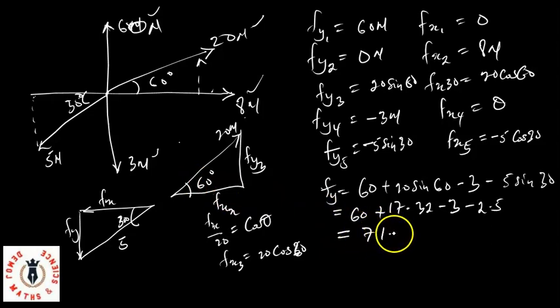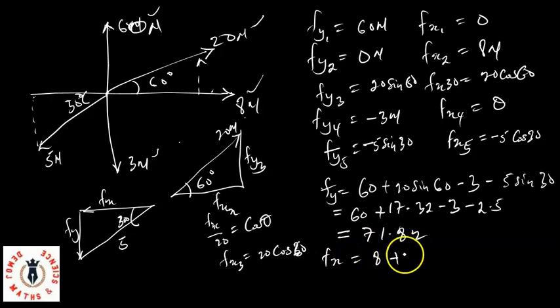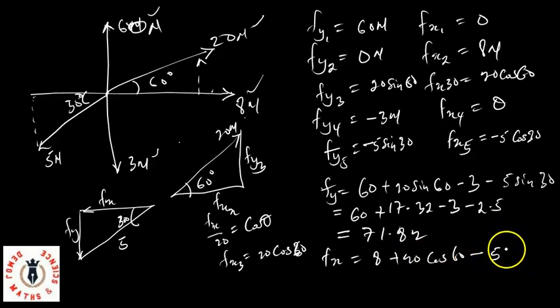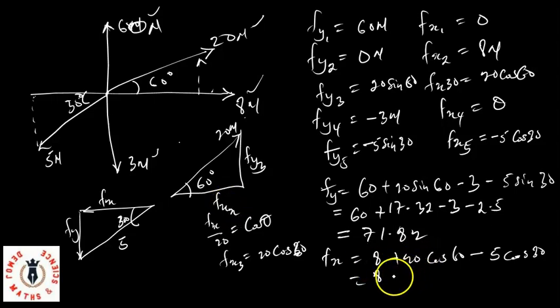For Fx: 0 plus 8 plus 20 cos 60 minus 5 cos 30. Cos 60 equals 0.5, so 20 cos 60 equals 10. And 5 cos 30 equals 4.33. So Fx equals 8 plus 10 minus 4.33, which equals 13.67 newtons.